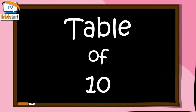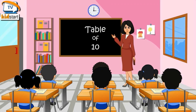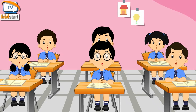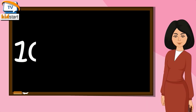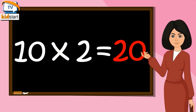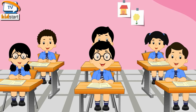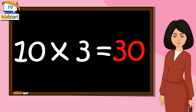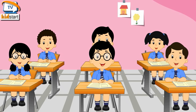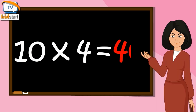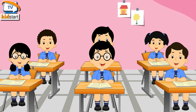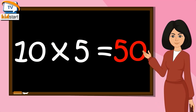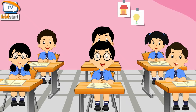Table of 10. 10 ones are 10, 10 twos are 20, 10 threes are 30, 10 fours are 40, 10 fives are 50.